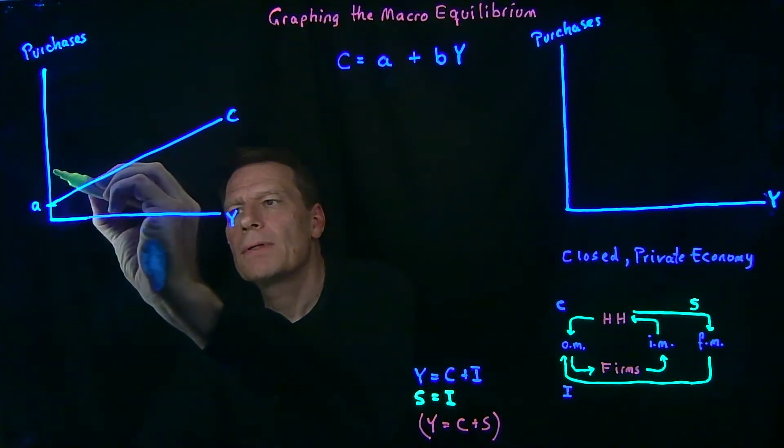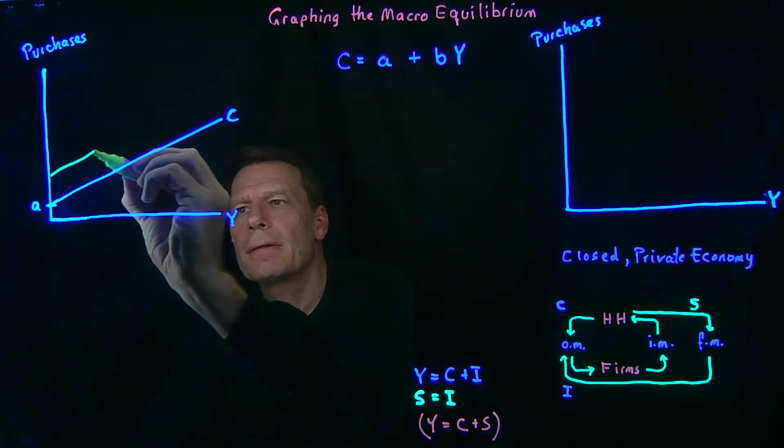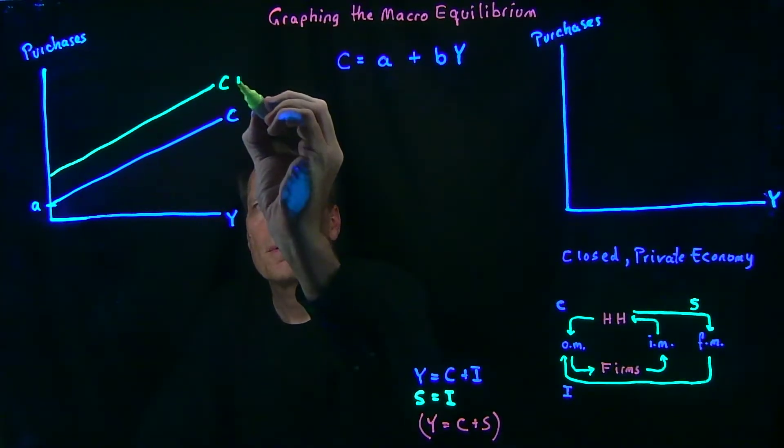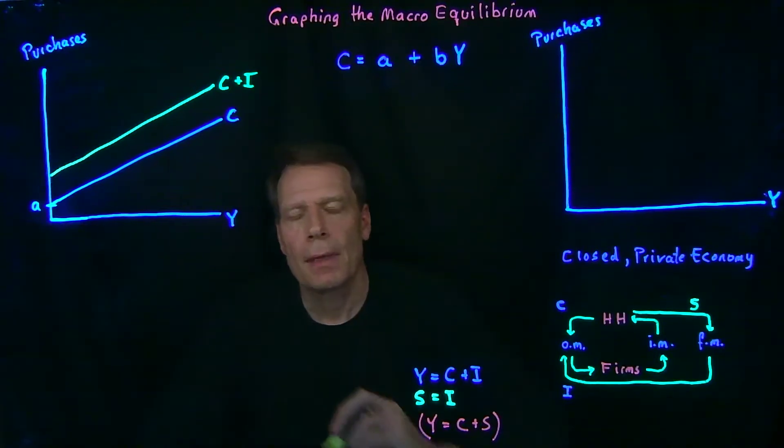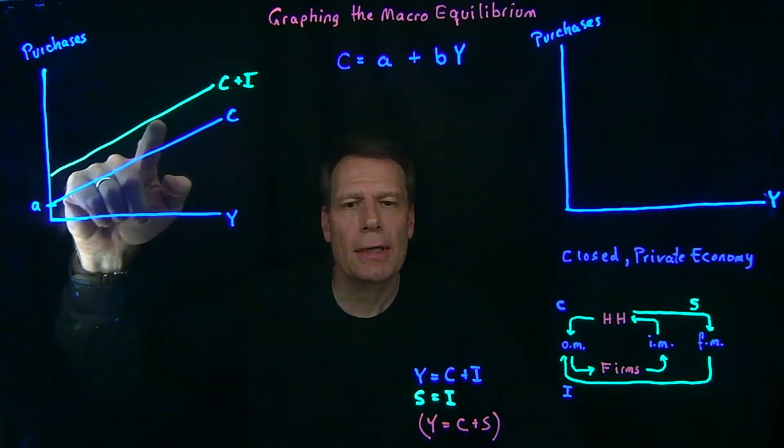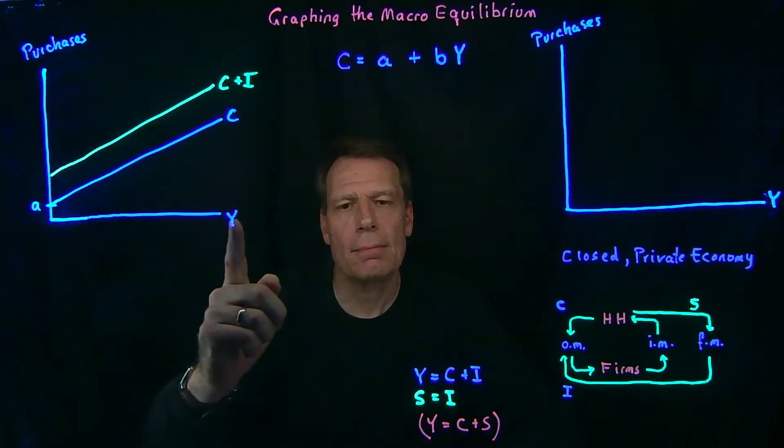When we do that, we just get this higher parallel line. And that parallel line now includes both consumption plus investment. So now we have a line that shows us how purchases in the economy change as income increases.